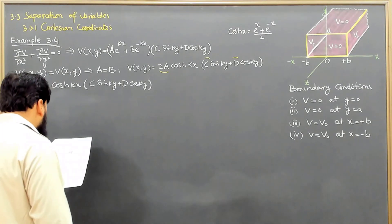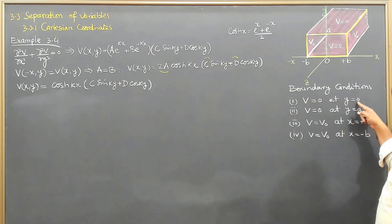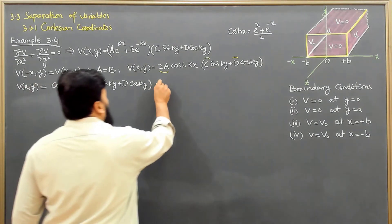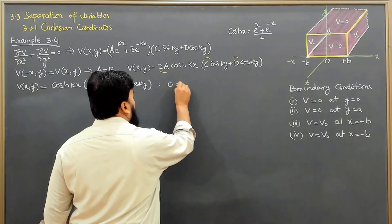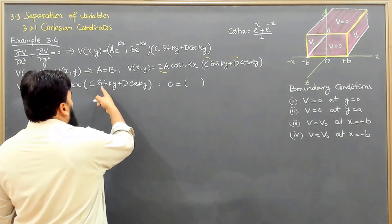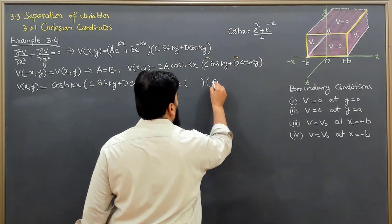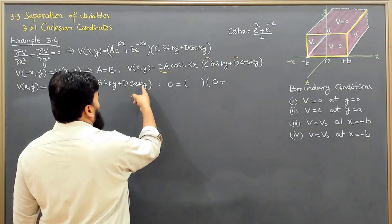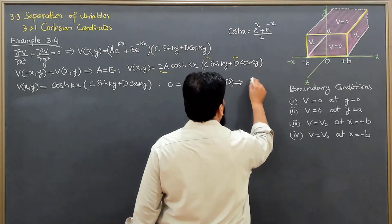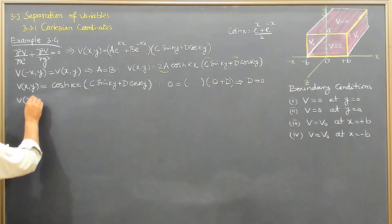Now let me come to the boundary conditions. Boundary condition 1 says that when y is 0, then v is equal to 0. Looking at the solution, the x portion is not depending on y. Here c·sin(0) when y is 0 gives 0, and cos(0) is 1, so d remains. This means the first boundary condition makes d equal to 0.